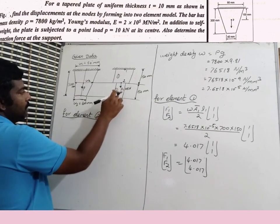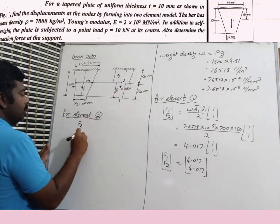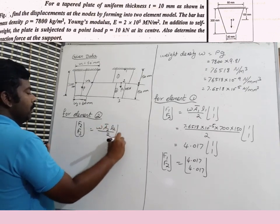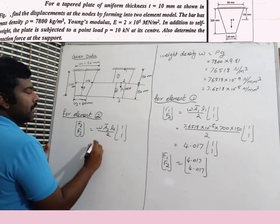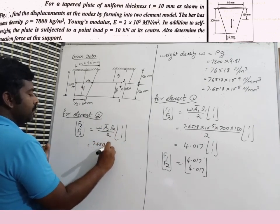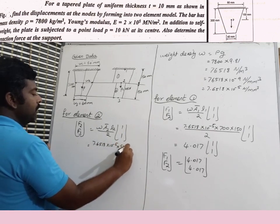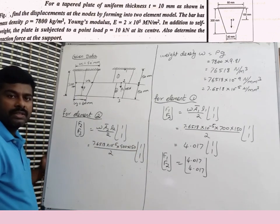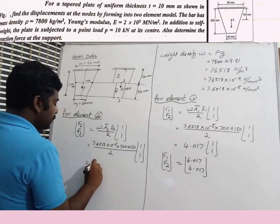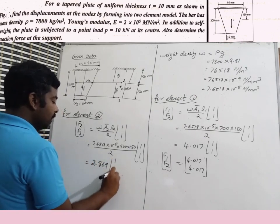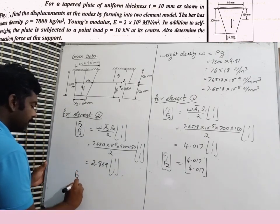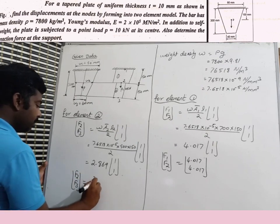For element 2, nodes 2 and 3: {F2, F3} = W × A2_bar × (L2/2) × {1, 1} = 7.6518×10⁻⁵ × 500 × (150/2) × {1, 1}. Solving gives {F2, F3} = {2.869, 2.869} N.